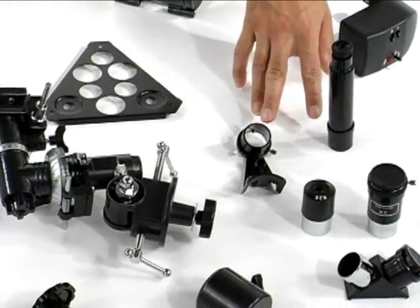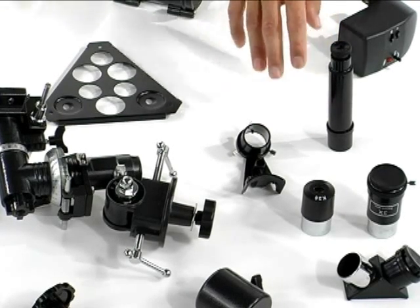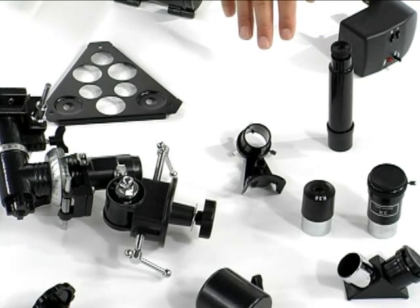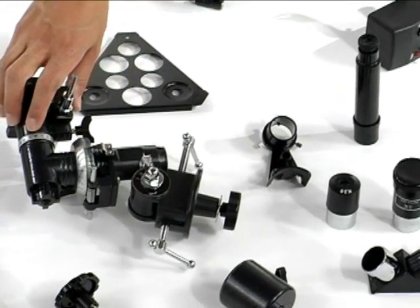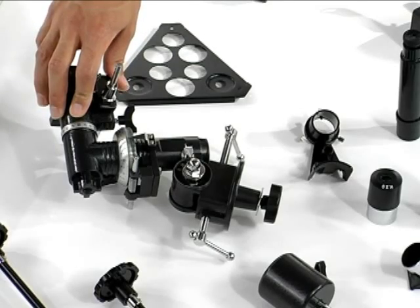Right here is the finder bracket and the finder scope, which you'll be using when you actually have your scope aligned and you're looking for your star or celestial object. This will be your equatorial mount, which will have your right ascension and declination on it.